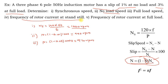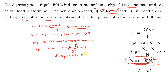Fourth, rotor frequency at standstill: when rotor speed is 0, slip = (ns − 0) / ns = 1. So f' = s × f = 1 × 50 = 50 Hz. The rotor frequency at standstill equals the supply frequency.